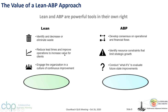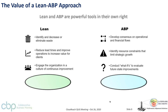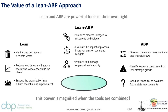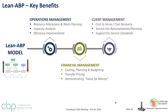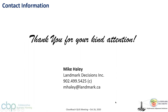In summary: lean and ABP are both powerful tools in their own right. Lean for identifying waste, reducing lead times, and building a culture of process improvement. ABP for understanding and building consensus on operational and financial flows, and conducting what-if analysis. The real value comes when you tie them together — to visualize the impact of improvements and understand the cost and budget implications.